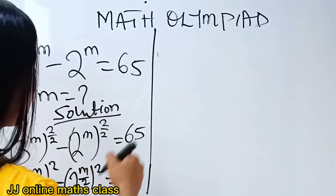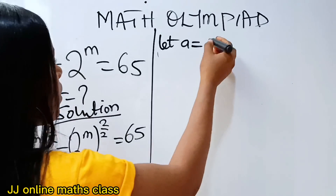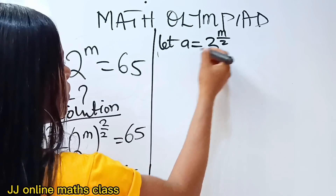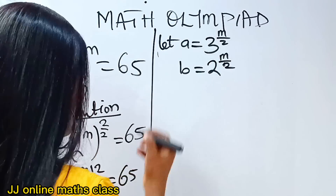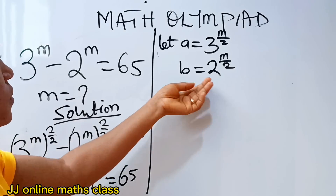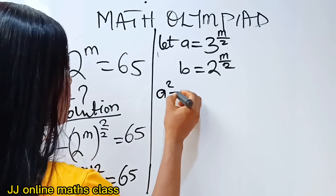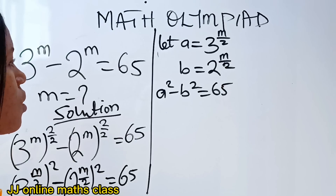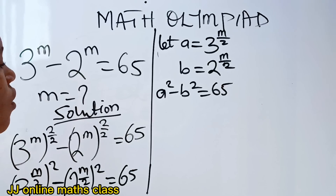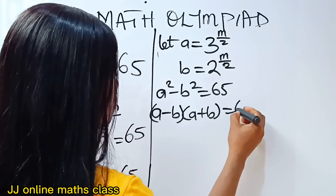So let's set a equals 3 to the power of m over 2 — that is the first number — and b equals 2 to the power of m over 2. We can now substitute a and b into this equation. So we can say that a squared minus b squared is equal to 65.